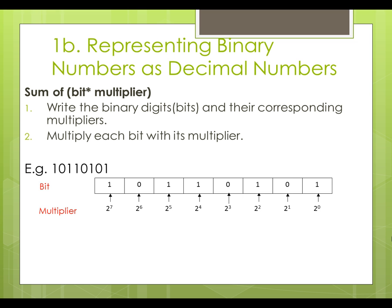Secondly, we will multiply each bit with its multiplier, starting from the rightmost bit. So the product of 1 and 1 is 1, the product of 0 and 2 is 0, the product of 1 and 4 is 4, and so on and so forth.